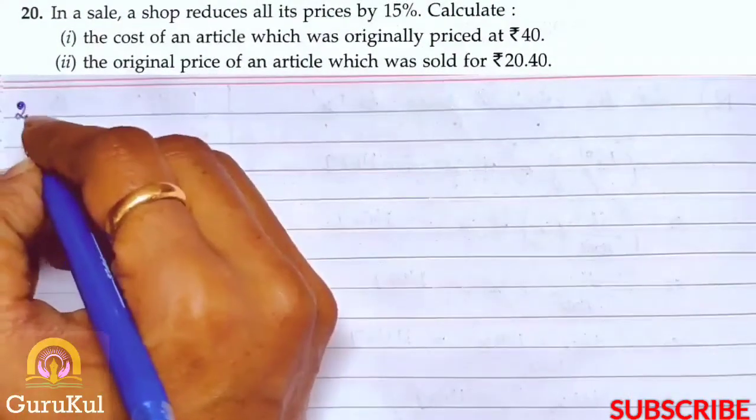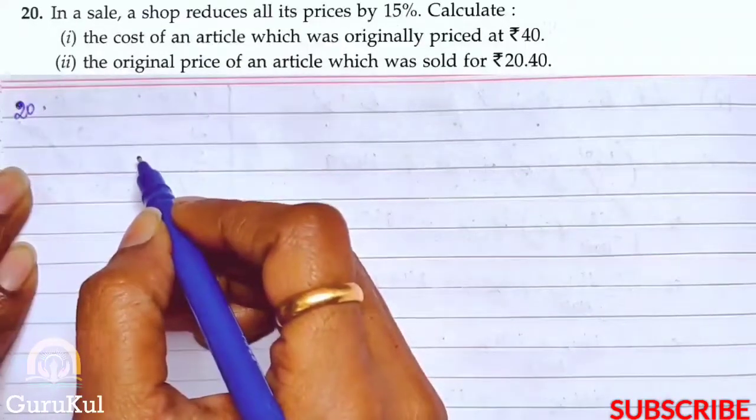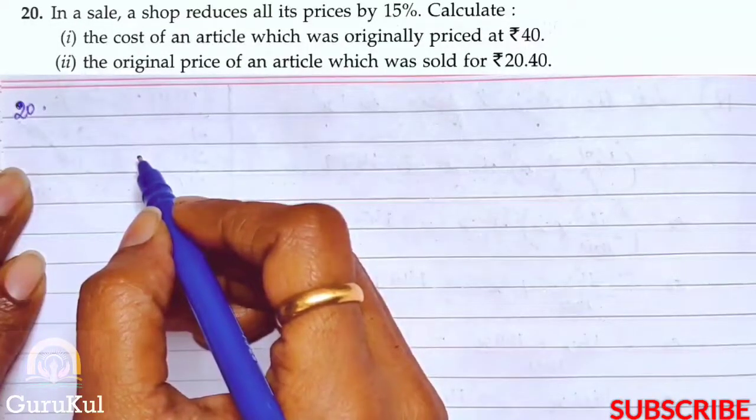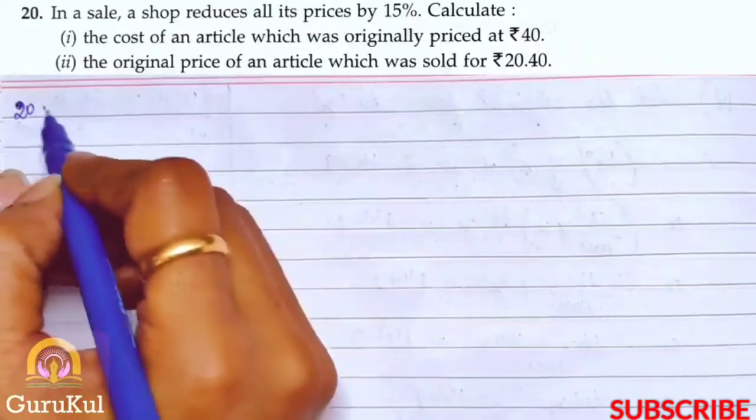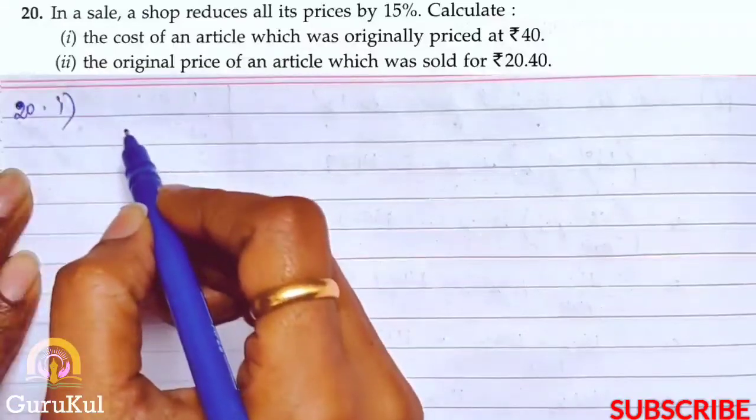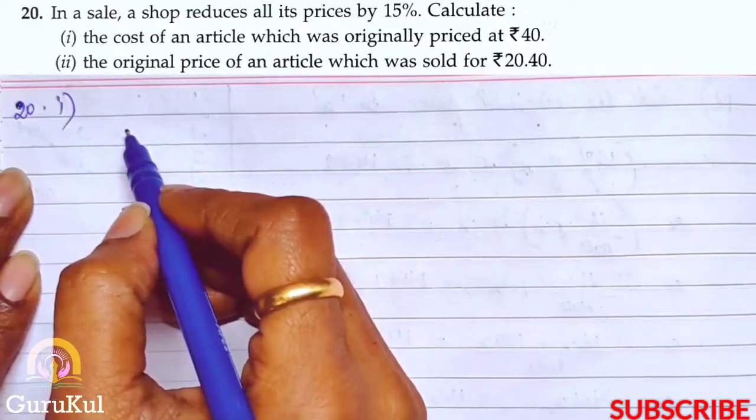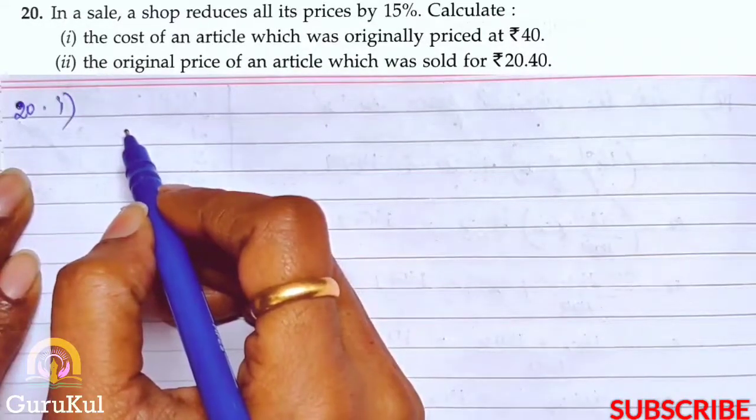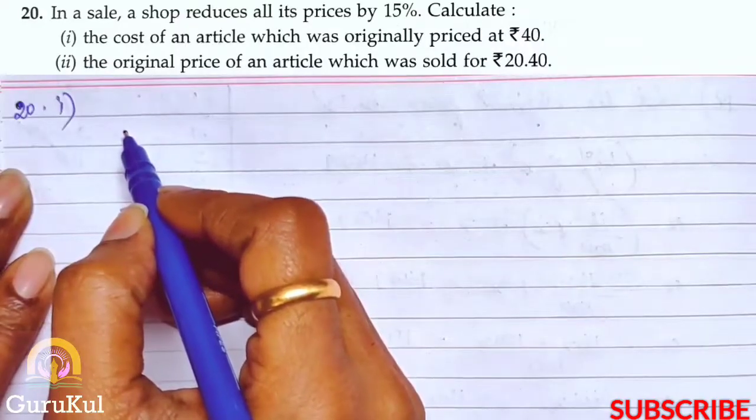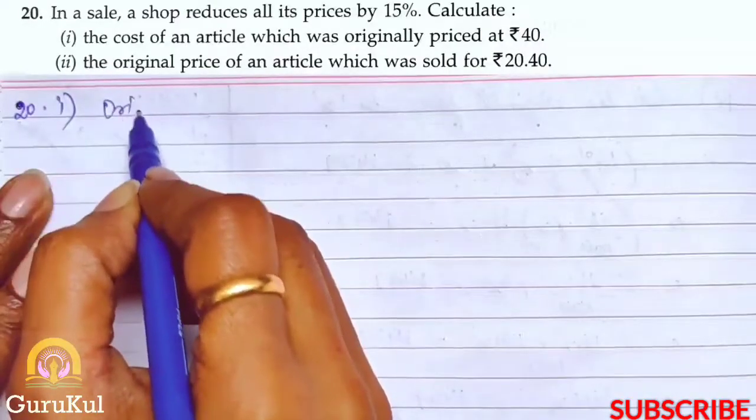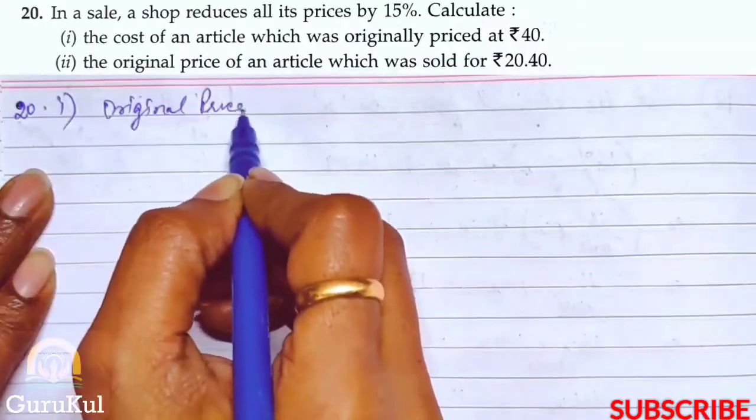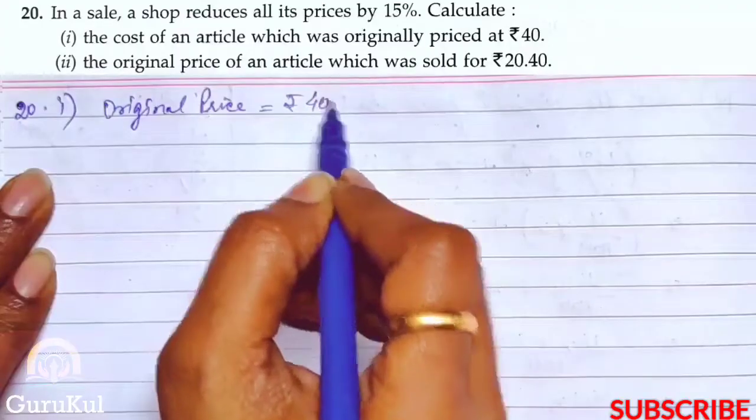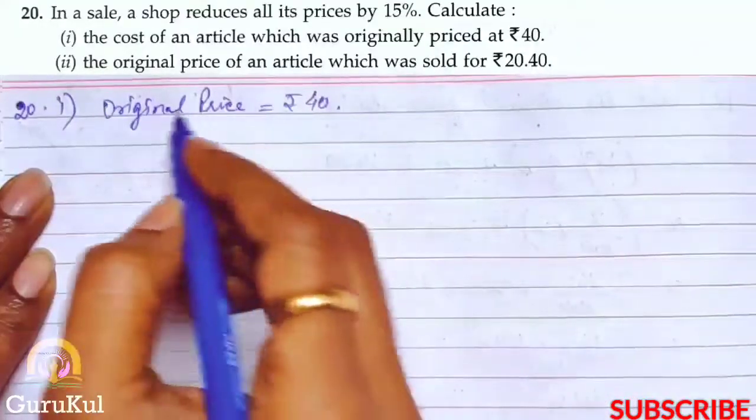Now question number 20. In a sale, a shop reduces all its prices by 15%. First one, we need to calculate the cost of an article which was originally priced at Rs. 40. So, original price is equal to Rs. 40.